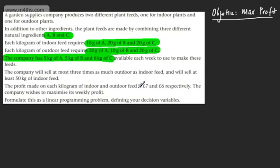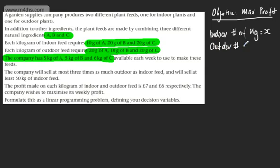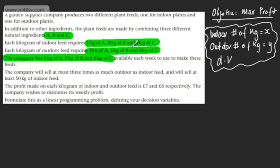We need to define our decision variables. In the last problem we were given them, but here I have to define them myself. The number of kilograms of indoor feed will be x, and the number of kilograms of outdoor feed will be y. The killer mistake here is to use A, B, and C as decision variables — they're not. We use that information to help build our constraints.